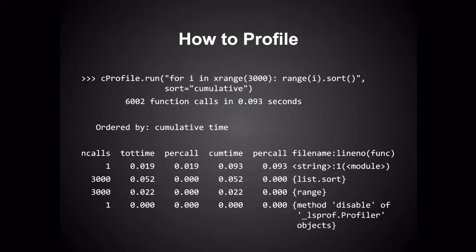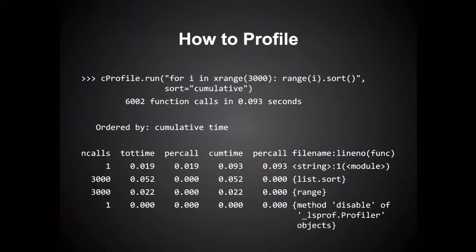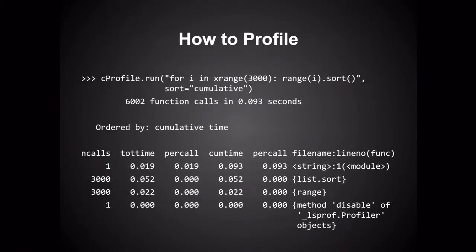The time difference between lines is the 40 milliseconds of iterating over the xrange. The reason it's not shown explicitly is because that's not a function call — it's inline code. Each line in the profile output represents a separate function. The totals generally add up, but because functions are nested, it's a tree structure rather than a linear addition.